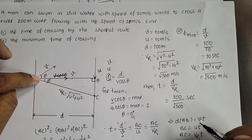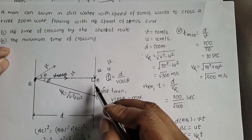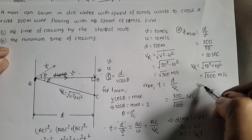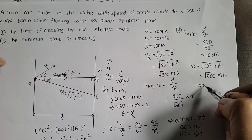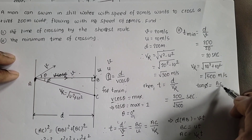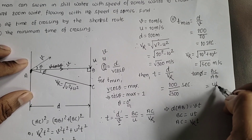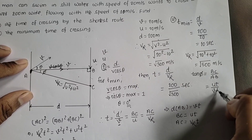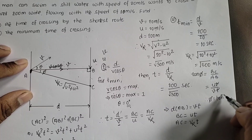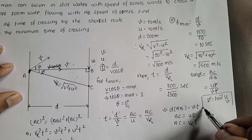The angle φ that the resultant velocity makes with AB: tan φ = BC / AB = (U·t) / (V·t) = U / V. Therefore φ = tan⁻¹(U / Vr) — specifically using the resultant components. So φ = tan⁻¹(U / V) = tan⁻¹(10 / 20), giving the downstream drift angle from the direct crossing direction.